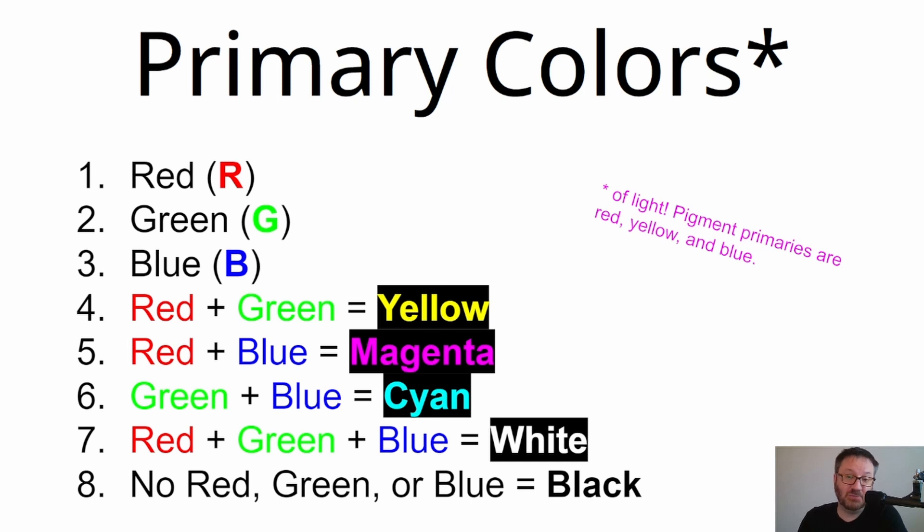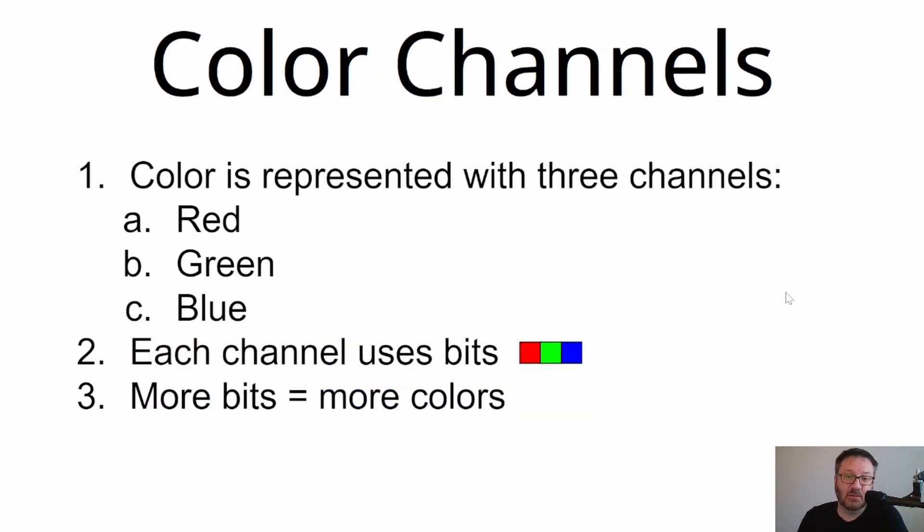Green plus blue will give you cyan. Yellow you're familiar with, magenta is kind of a pink color, and cyan is sort of a sky blue color. If you take all of those colors—red, green, and blue—together in equal amounts, you get white light, and the absence of all of those colors is black. We'll see references to that in the hex system that we'll see at the end.